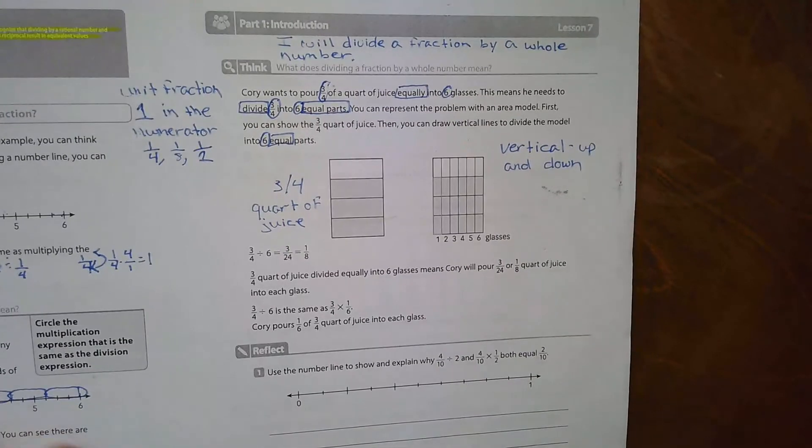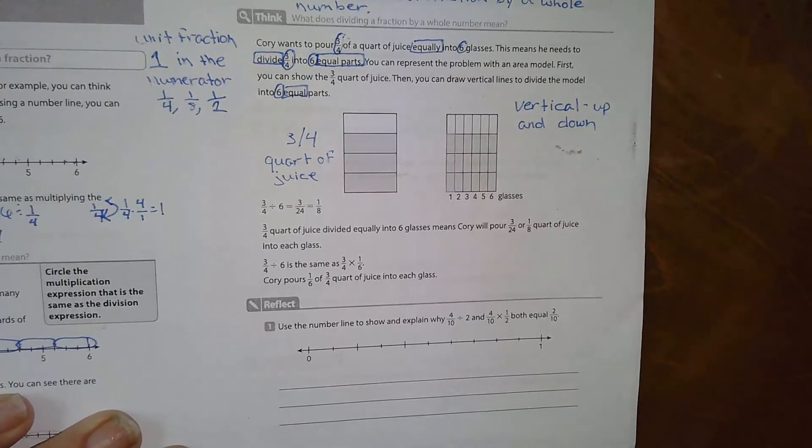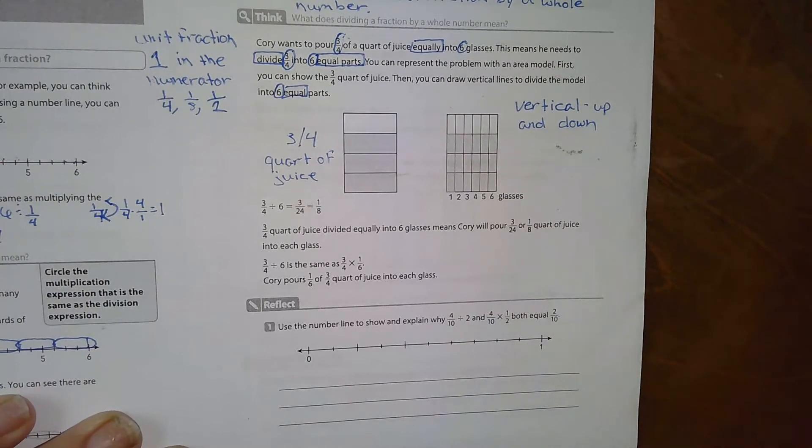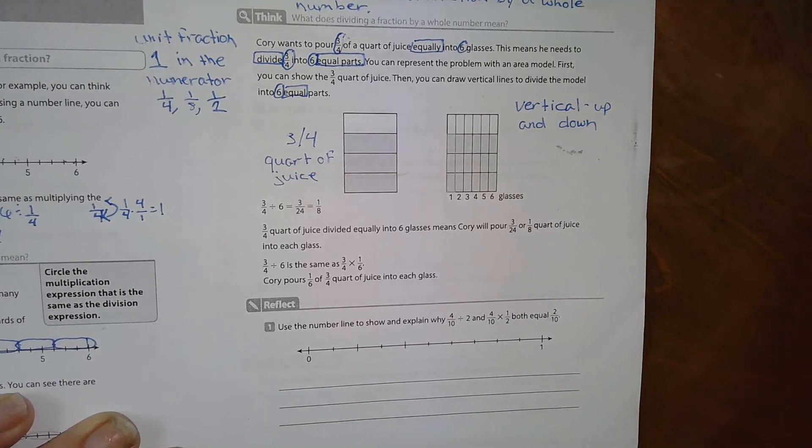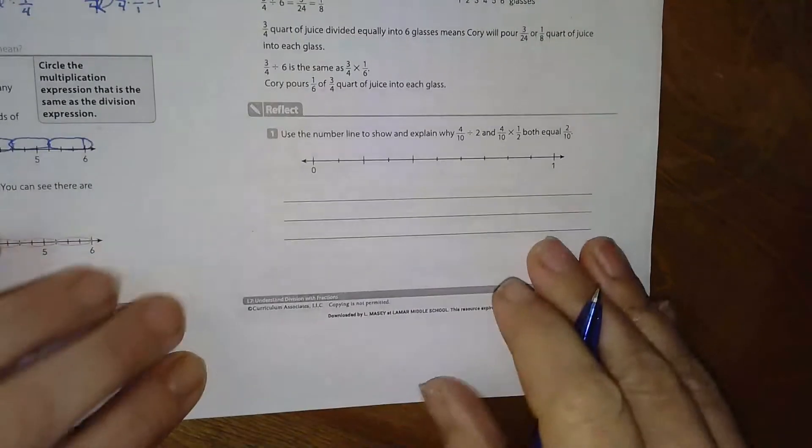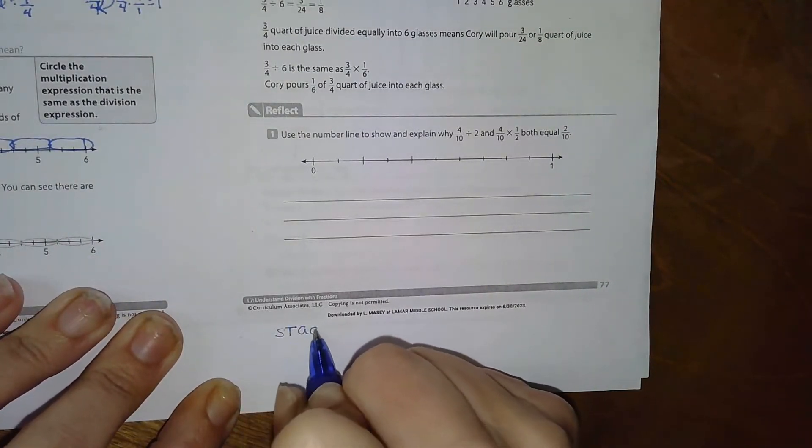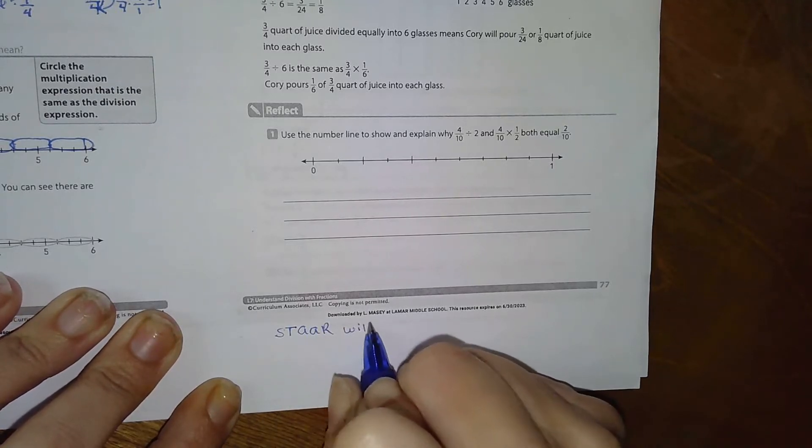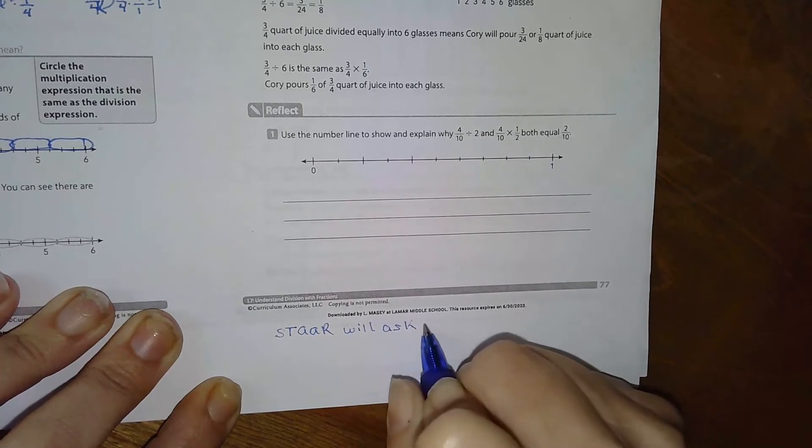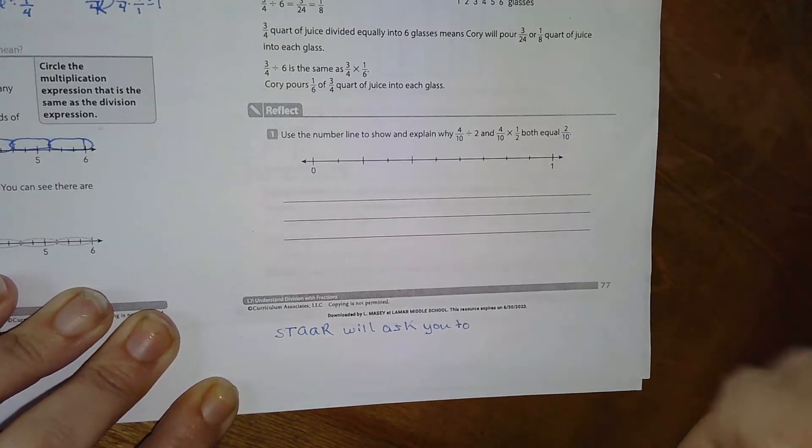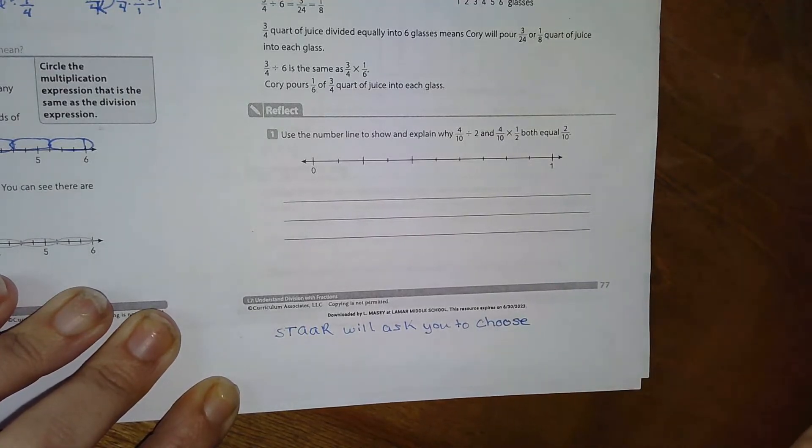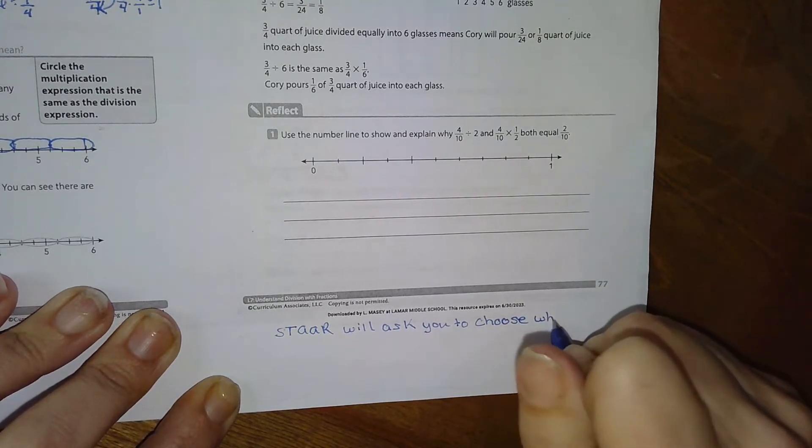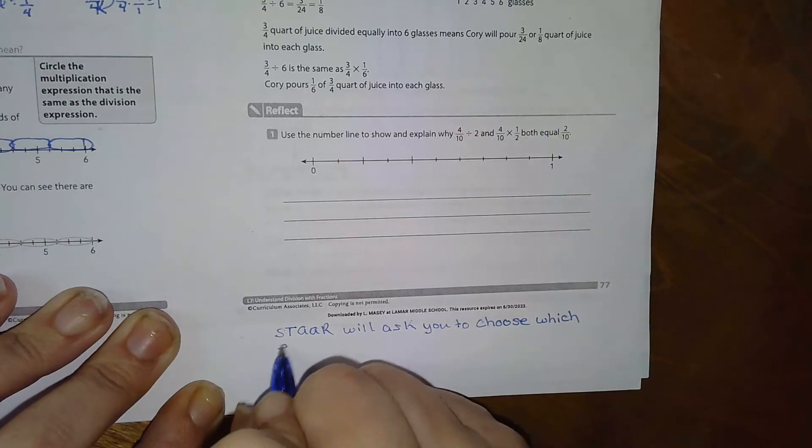Okay, so on our STAR test, it gives you, you have to choose which expression is equivalent, okay? The models help you visualize it, okay? So I'm just going to kind of make a note here. STAR will ask you to usually choose, but I'm not sure with the new testing that's coming out what it will look like, but they will have you choose which expression is equivalent.